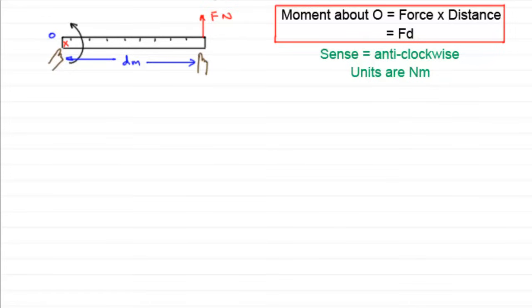Now, suppose I had the same ruler again, and I decide to put my finger at the same point, just on that point there, on the end of the ruler. And this time, I decide to push downwards like this on the ruler. Well, clearly, about this point here, which we'll call O, the ruler would want to turn in a clockwise sense.